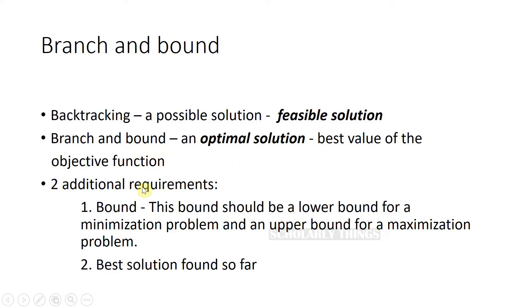There are two additional requirements for branch and bound. First one is a bound on the best value of the objective function. This bound should be a lower bound for a minimization problem and an upper bound for a maximization problem. Second one is the value of the best solution found so far.